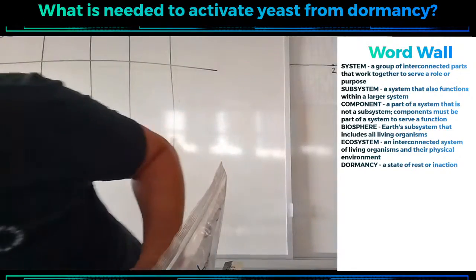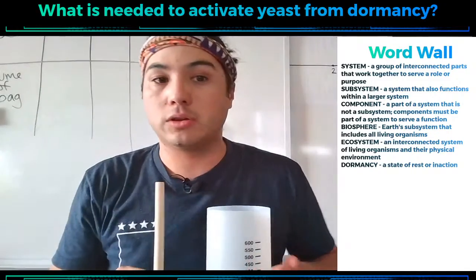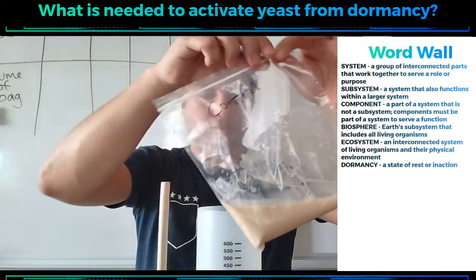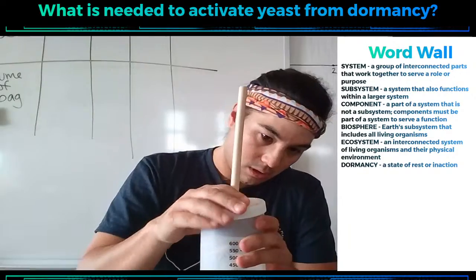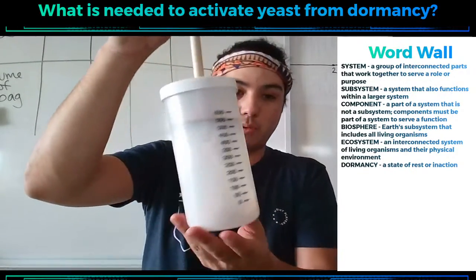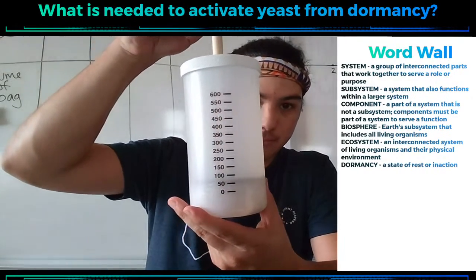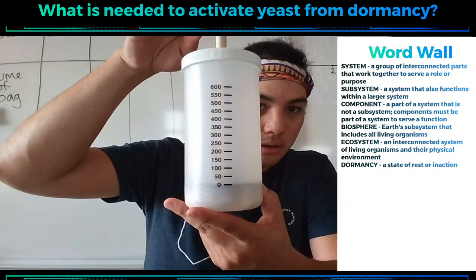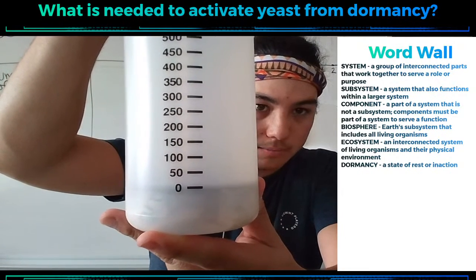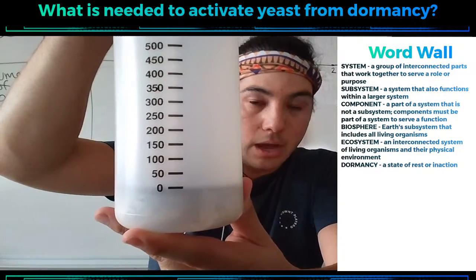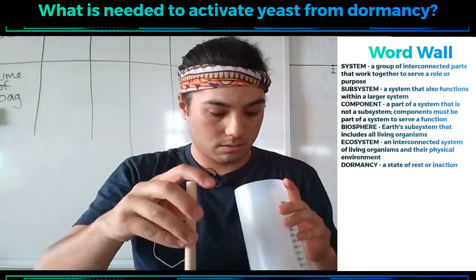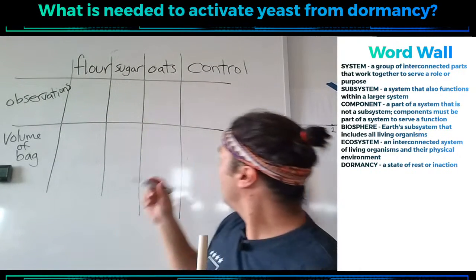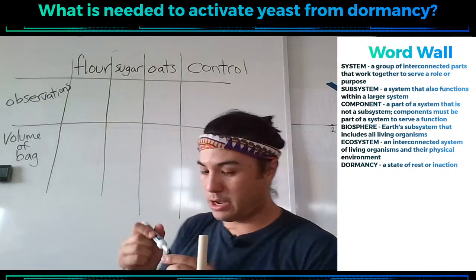Now it is time for us to do some measuring with our volume tube. We're going to start with our control as we usually do. Here's our control — still sealed, goes into the tube, lid on. And then we're going to push down with one finger until we can't anymore. Just like we suspected: our control is at zero. Our plunger has gone down, it is at zero. We've got no extra volume added. Volume of the bag for our control: zero milliliters.